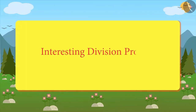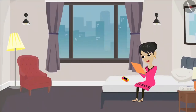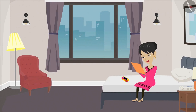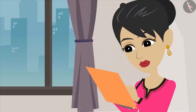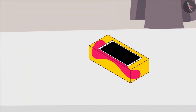Interesting Division Problems Part 5. Today we will learn how large numbers are divided. Vandana's mother has taken a new mobile phone on installments, and she is trying to find out how much money she will pay for this mobile every month.